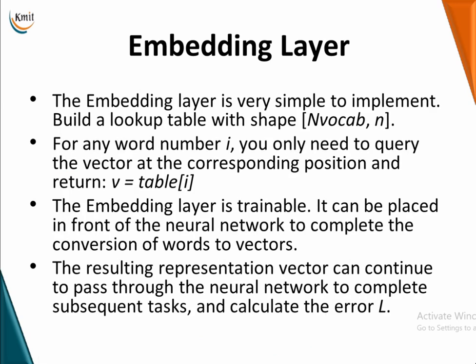The embedding layer is simple to implement using a lookup table. You have n_vocab words and you create a lookup table inside the embedding layer. For any word number i, you only need one query to retrieve the vector at the corresponding position: v equals table[i]. From the lookup table, you find the word number and get the required word vector. This embedding layer is trainable and can be placed in front of a neural network to convert words into vectors. The resulting representation vectors can continue to pass through the network for any subsequent task.